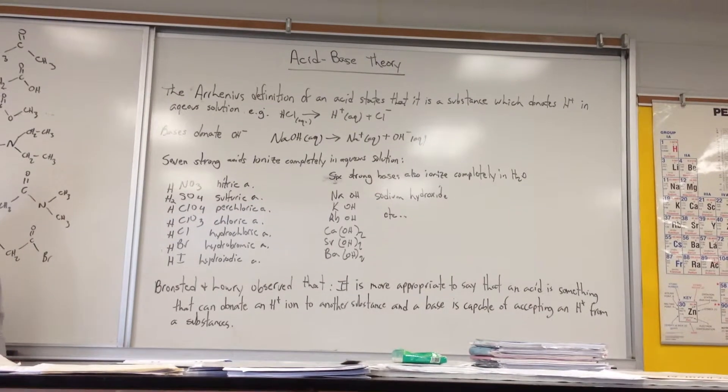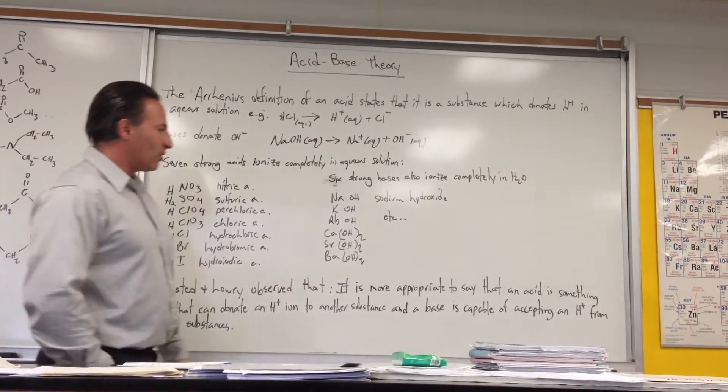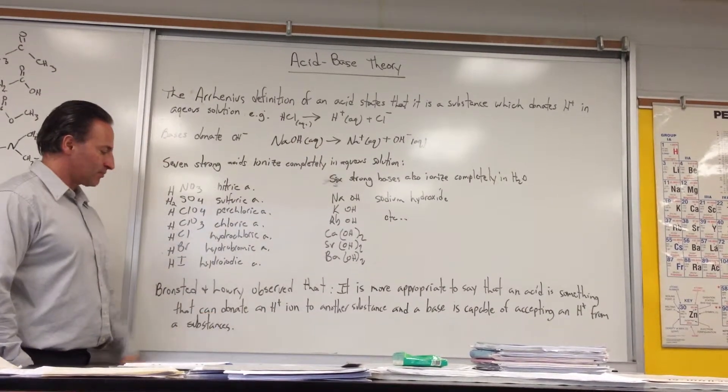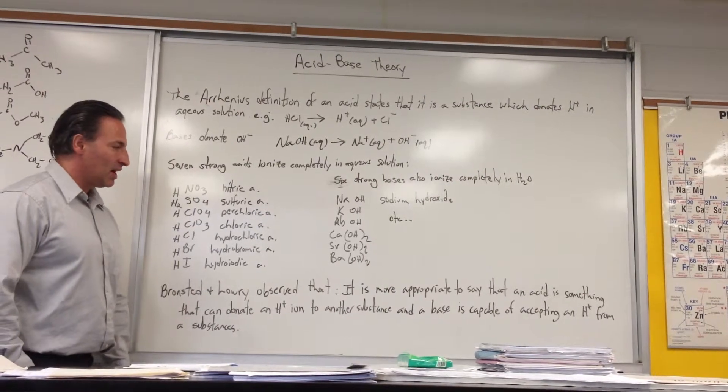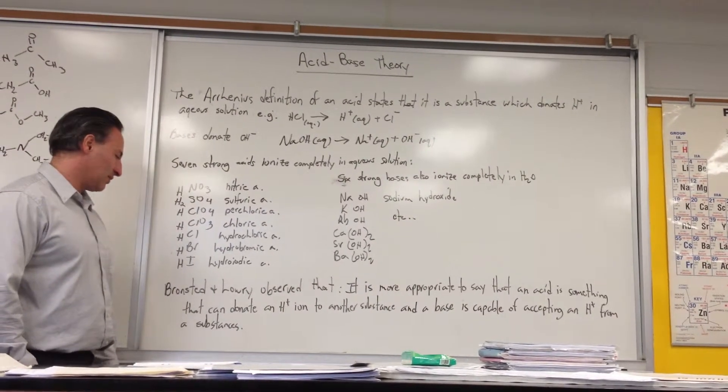In the evolution of acid-base theory, Bronsted and Lowry observed that it is more appropriate to say that an acid is something that can donate a proton or an H+ ion to another substance, and that a base is capable of accepting an H+ from a substance.